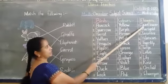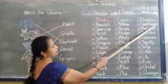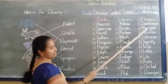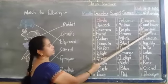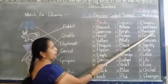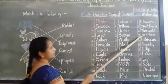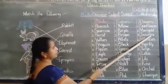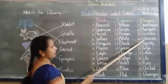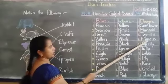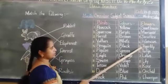Flowers. F-L-O-W-E-R-S. Flowers. Sunflower. S-U-N-F-L-O-W-E-R. Sunflower. Marigold. M-A-R-I-G-O-L-D. Marigold. Jasmine. J-A-S-M-I-N-E. Jasmine. Hibiscus. H-I-B-I-S-C-U-S. Hibiscus.